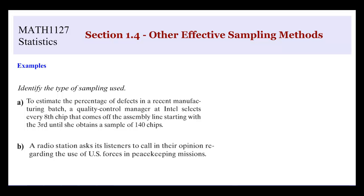Let's look at some examples and identify what kind of sampling was used. For A: to obtain the percentage of defects in a recent manufacturing batch, a quality control manager at Intel selects every eighth chip off the assembly line, starting with the third, until she obtains a sample of 140 chips. She selects number 3, then 11, then 19, and so on. This is systematic sampling.